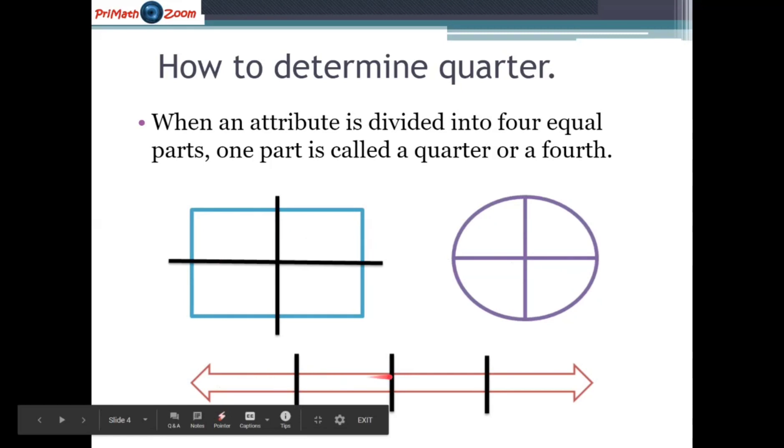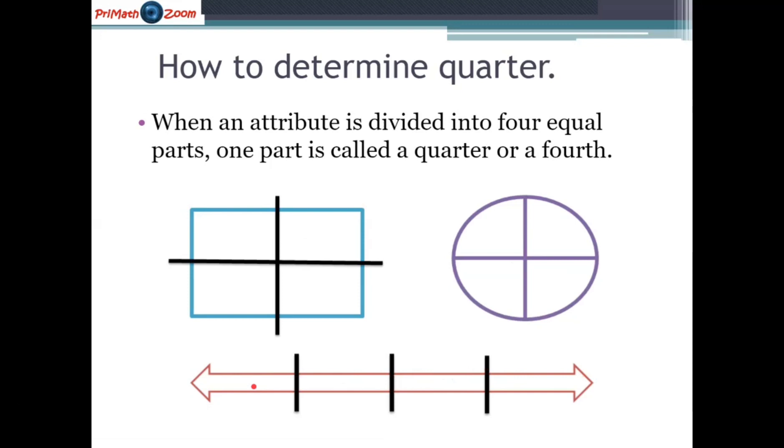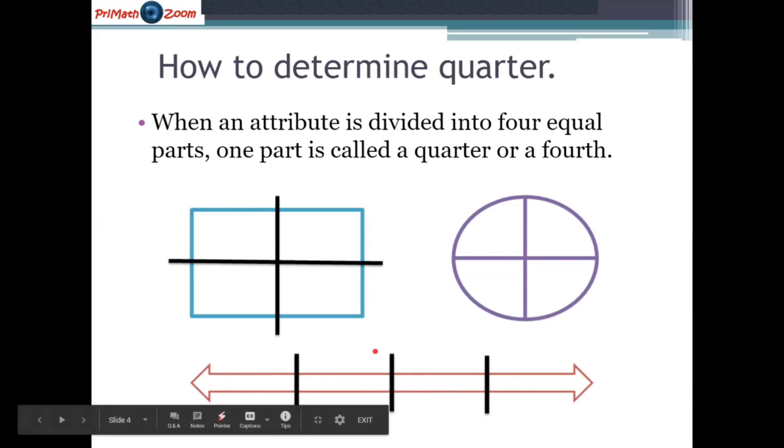Here again we have another attribute divided into four equal parts. One part, two parts, three parts, four parts. And one part is called a quarter. Good job.